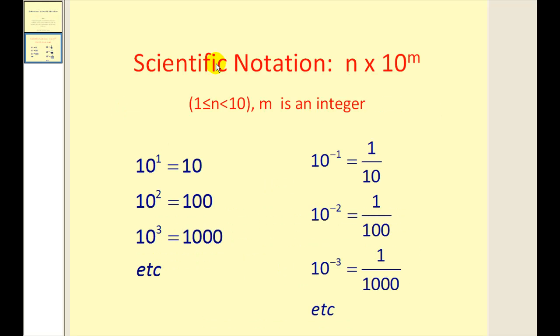Let's first review. Scientific notation is a number in the form of n times ten to some power m, where n has to be greater than or equal to one and less than ten, this number here, and the exponent m must be an integer.